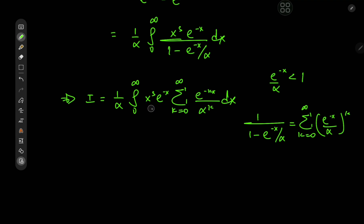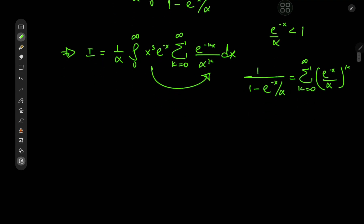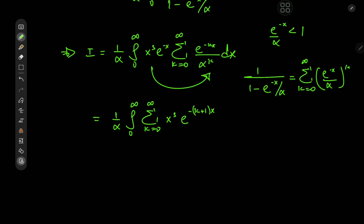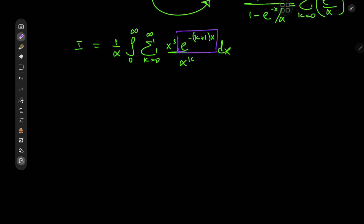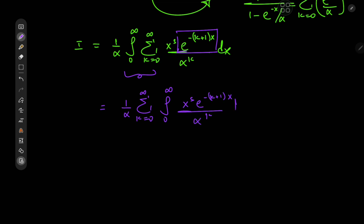Now these two terms are of course independent of the index variable k, so we'll take them inside the summation operator. We have 1 by alpha times the sum over k of the integral from zero to infinity of x to the s times e to the negative (k plus 1) times x divided by alpha to the k, dx. Thanks to the presence of this exponential function in k and x that acts as a damping factor, there are no problems regarding convergence, so we can switch up the order of the integration and summation operators to get 1 by alpha times the sum over k from zero to infinity of the integral from zero to infinity of x to the s times e to the negative (k plus 1) times x divided by alpha to the k, dx.